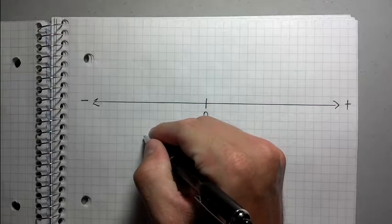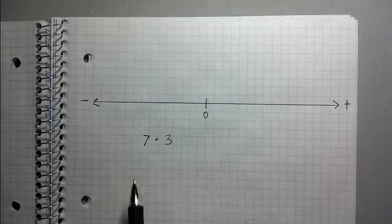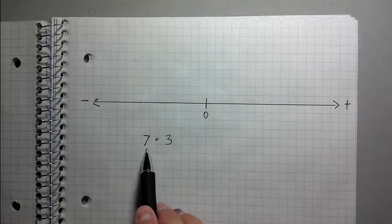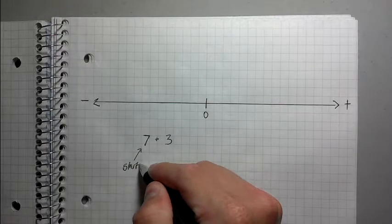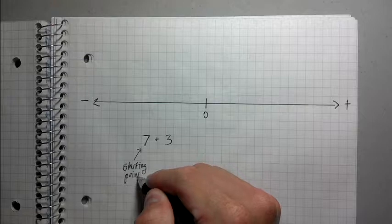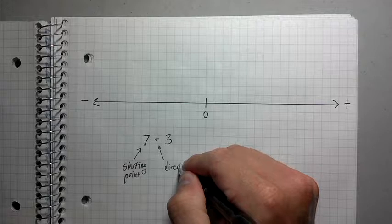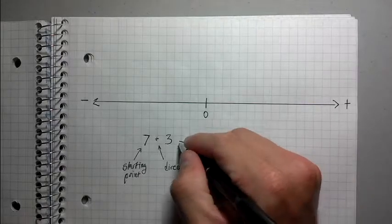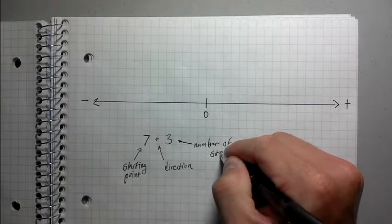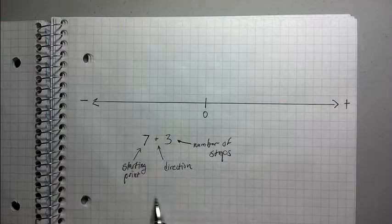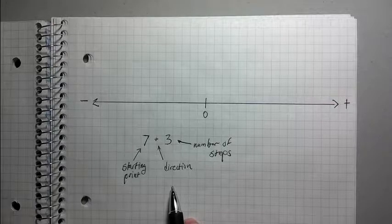Let's say we had 7 plus 3. Now, I realize this does not have negative numbers, but I'm going to use this to illustrate a point. Look at 7. 7 is the starting point. You want to think of it as the starting point. The plus sign is like the direction. You want to think of it as the direction. And 3 is the number of steps. This is a very useful way to conceive of these sort of problems because the fact is, it always works, no matter what.